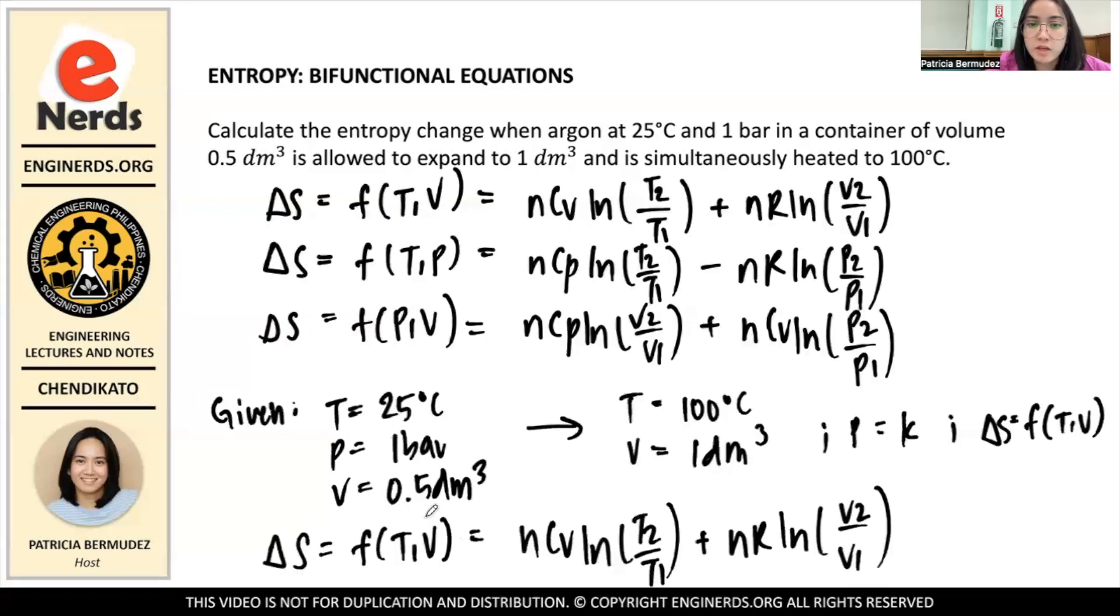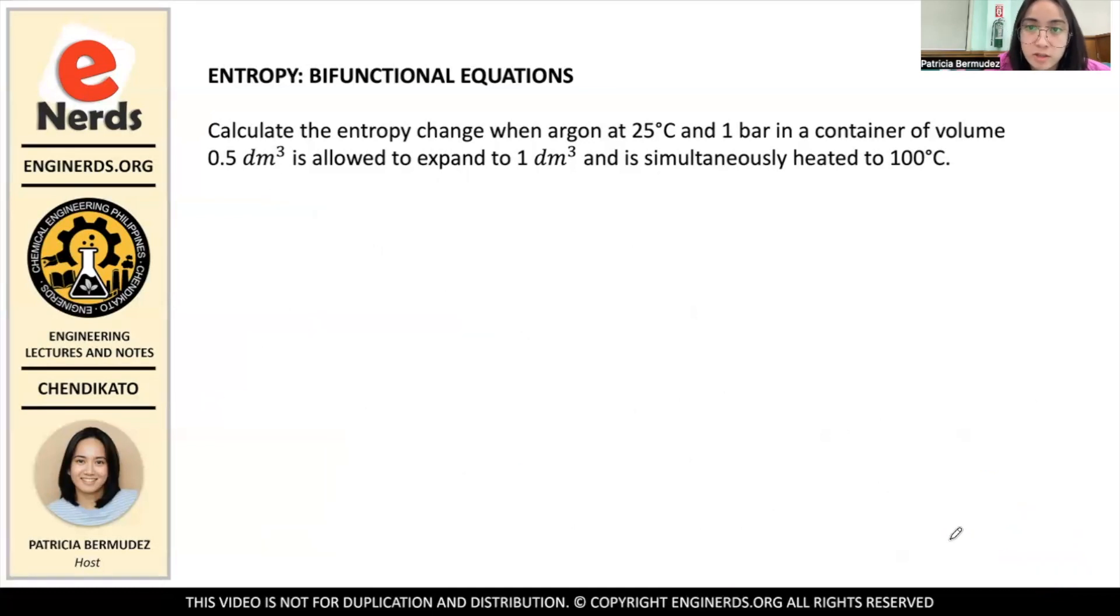And now, we have one unknown value here that we still have to find. And that is the number of moles. And we know that PV equals NRT. And we can find N using PV over RT. And we need pressure, volume, and temperature. And among these two sets of values, this one is complete - it has T, P, and V. So we use these values to find N because the number of moles in the system won't change. So your N is constant.